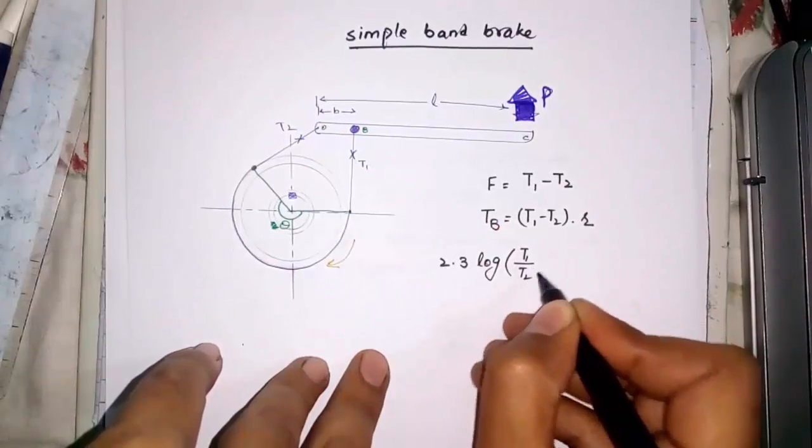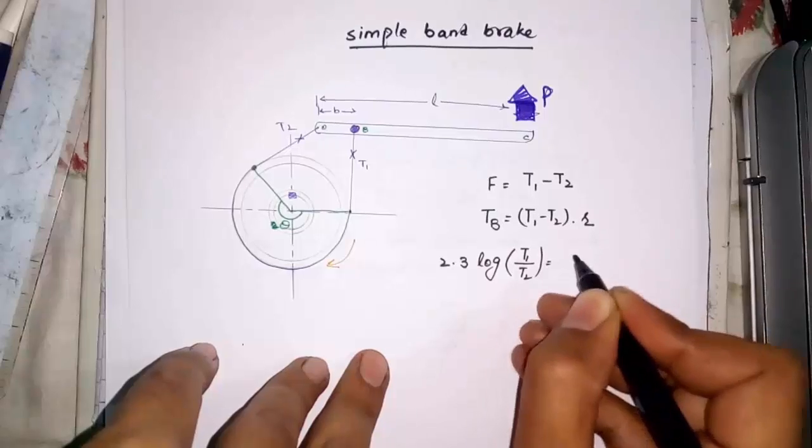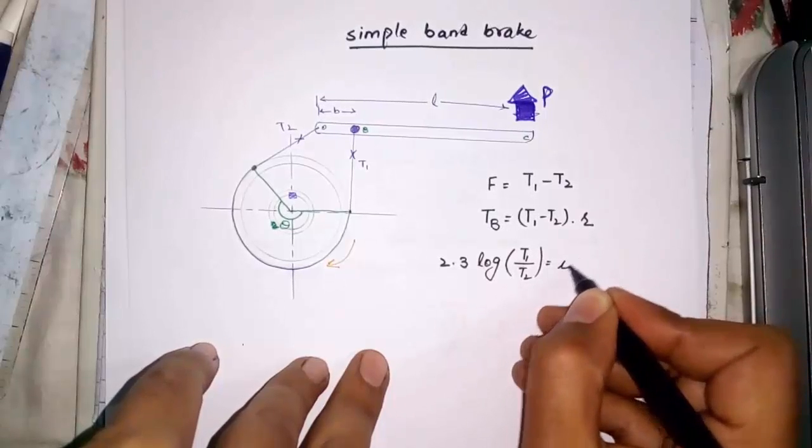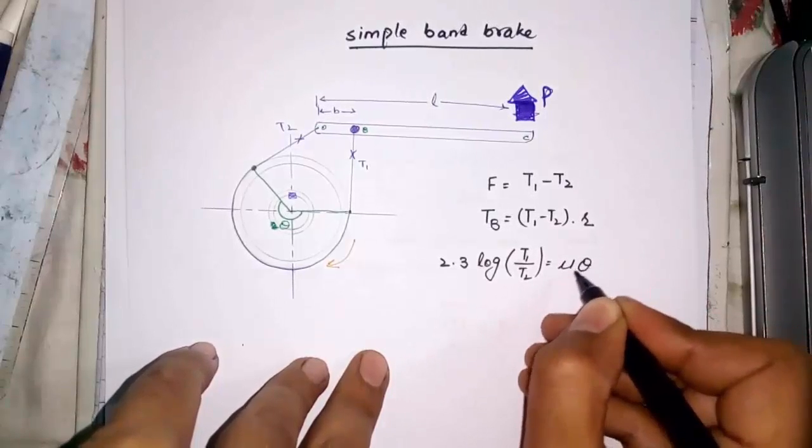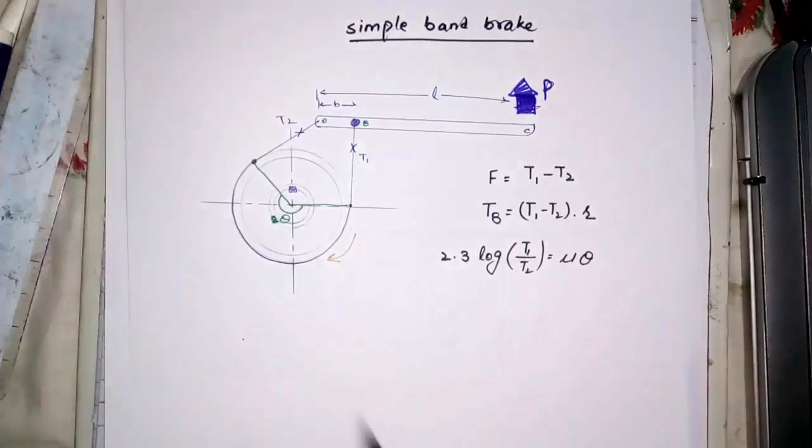Ratio between tension can be found by this relation. In it, mu is coefficient of friction between bands and wheels material. And theta is lap angle or contact angle.